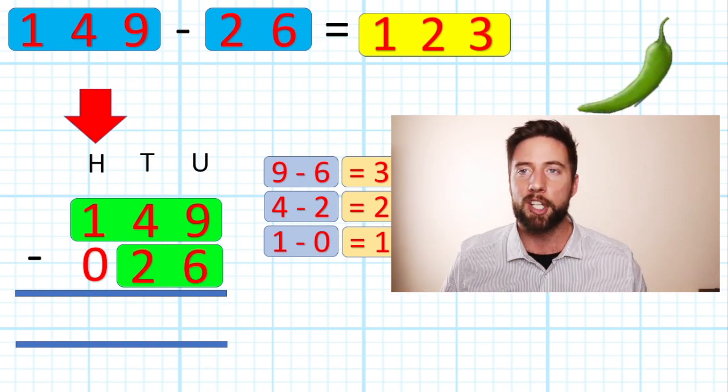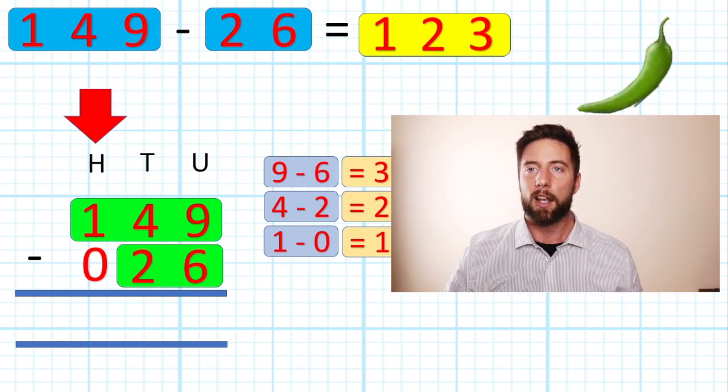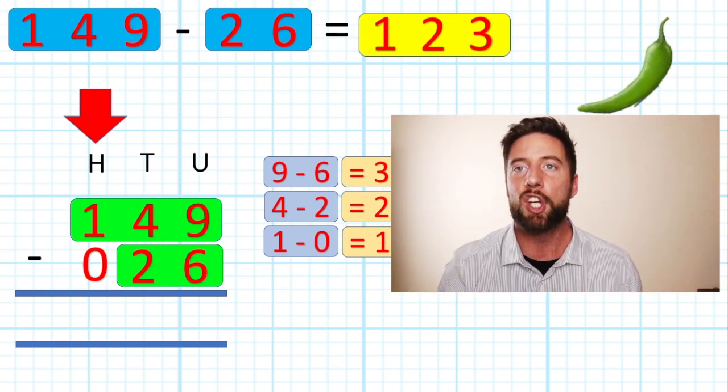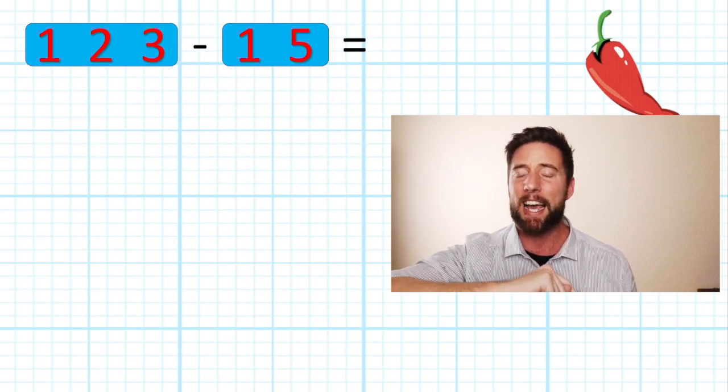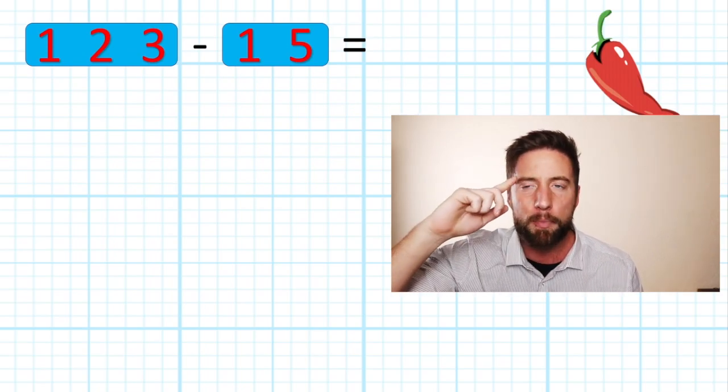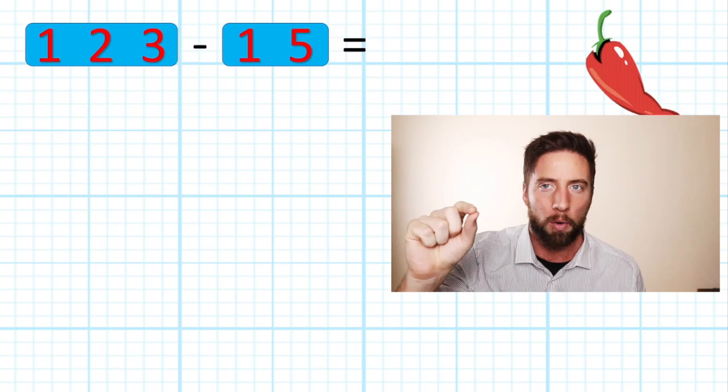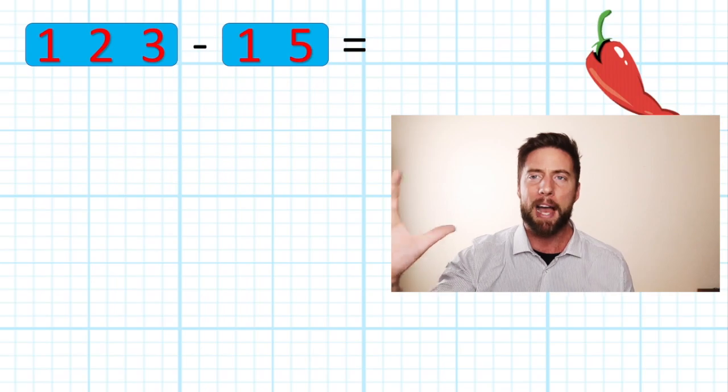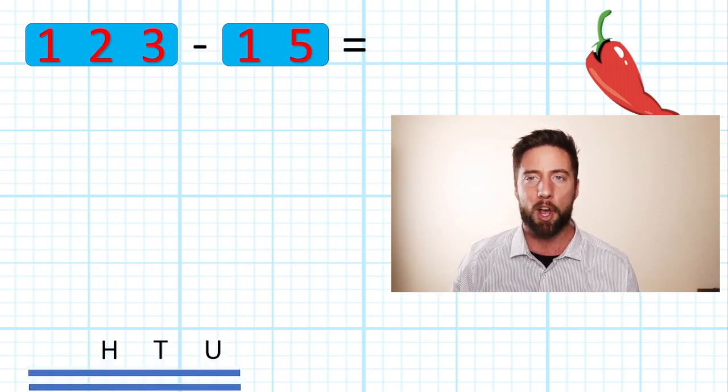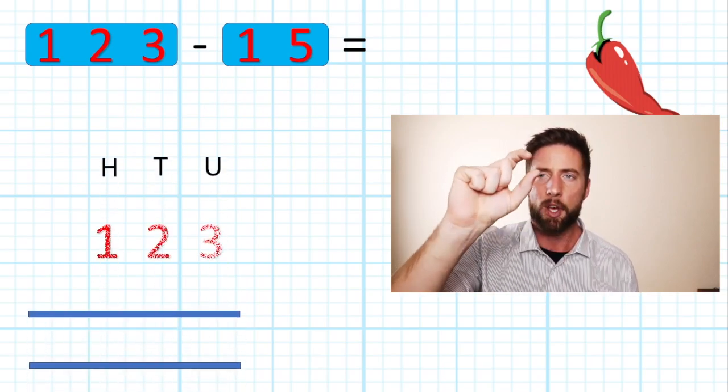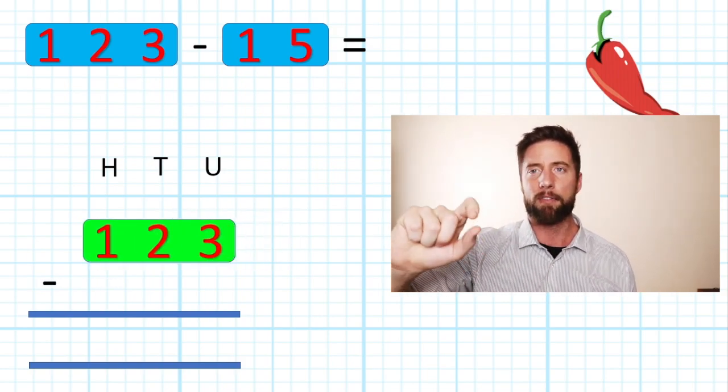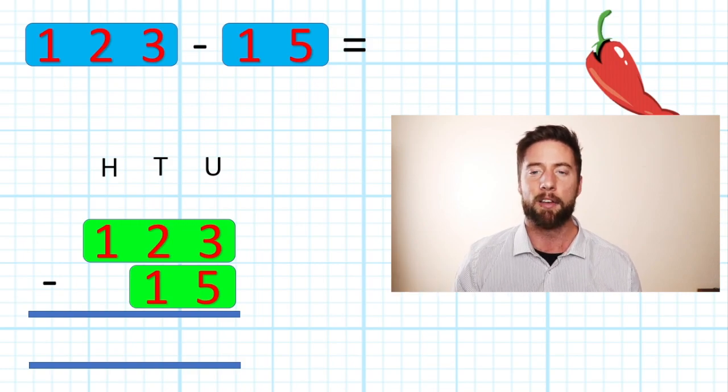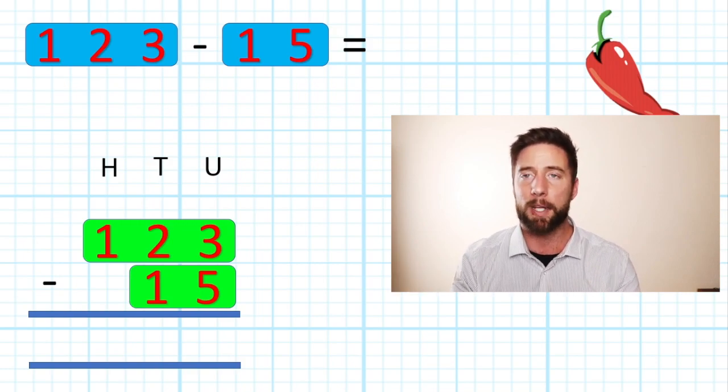Don't forget to always pull your answer up to your number sentence to complete your question. Green chili challenge complete! Let's move on to red chili challenge: 123 subtract 15. Now you are thinking to yourself—I can read your mind—you are thinking that is just as easy as before. Well, let's check it out. Let's put it back into our columns like we know how to now: 123 subtract 15.